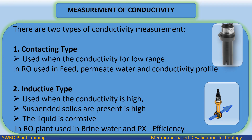Measurement of conductivity — there are two types: 1) Contacting type, used when conductivity is in a low range; in RO it is used for feed, permeate water, and conductivity profile. 2) Inductive type, used when conductivity is high, suspended solids presence is high, or the liquid is corrosive; in RO plant it is used for brine water and pressure exchanger (PX) efficiency.